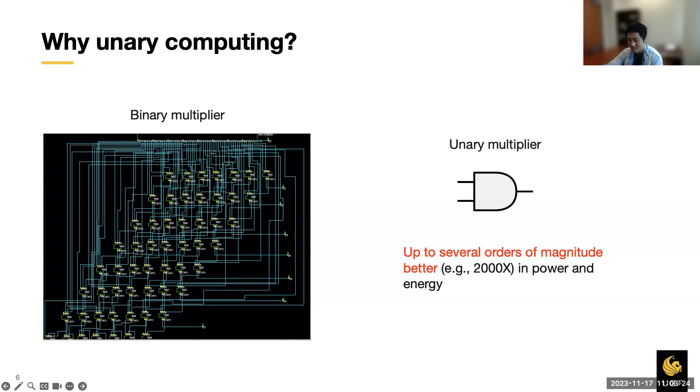Though unary computing is promising for deep learning, it is not a new concept. It dates back to the late 1960s and has found applications in signal processing and error correction. With the recent prosperity of deep learning, unary computing is rejuvenated due to its efficiency promise and robustness to noises.